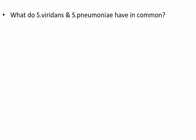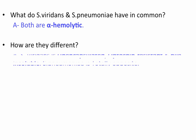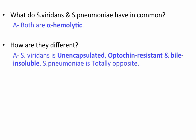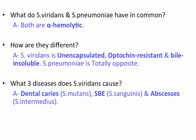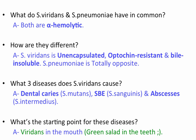Question time: What do Strep viridans and Strep pneumoniae have in common? Both are alpha hemolytic. How are they different? What three diseases does Strep viridans cause? And what's the starting point? Remember the green salad — salad stuck in the teeth.